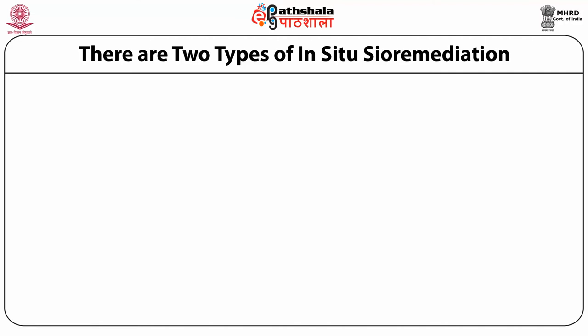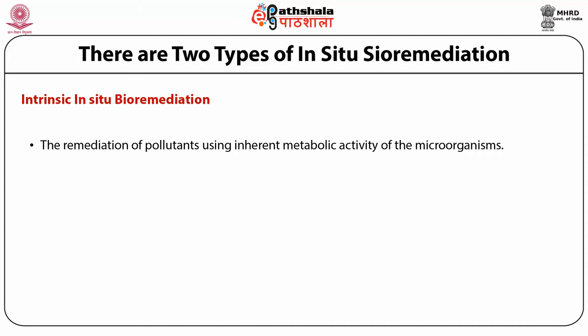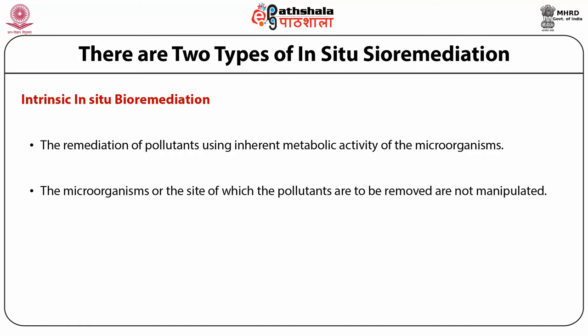There are two types of in-situ bioremediation techniques: intrinsic in-situ bioremediation and accelerated or engineered in-situ bioremediation. The remediation of pollutants using the inherent metabolic activity of microorganisms — usually indigenous microbes — is known as intrinsic bioremediation. The microorganisms may be tested at the laboratory for their natural capability of biodegradation and appropriately utilized.